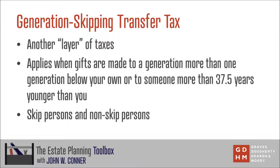In today's discussion, we will talk a lot about skip persons and non-skip persons. Skip persons are those individuals that are more than one generation below your own, or who are more than 37 and a half years younger than you. Non-skip persons, as their name implies, are simply those persons that do not meet the definition of skip persons, and therefore the generation-skipping transfer tax would not apply to them.